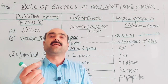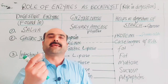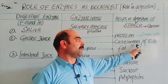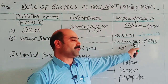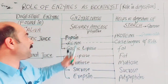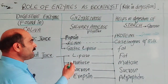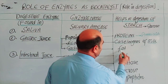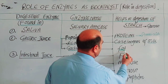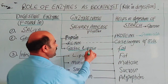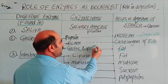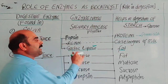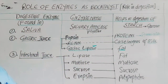The protein casein is found in milk. Gastric lipase digests fats. Lipase is related to fat digestion, and fat digestion starts in the stomach.